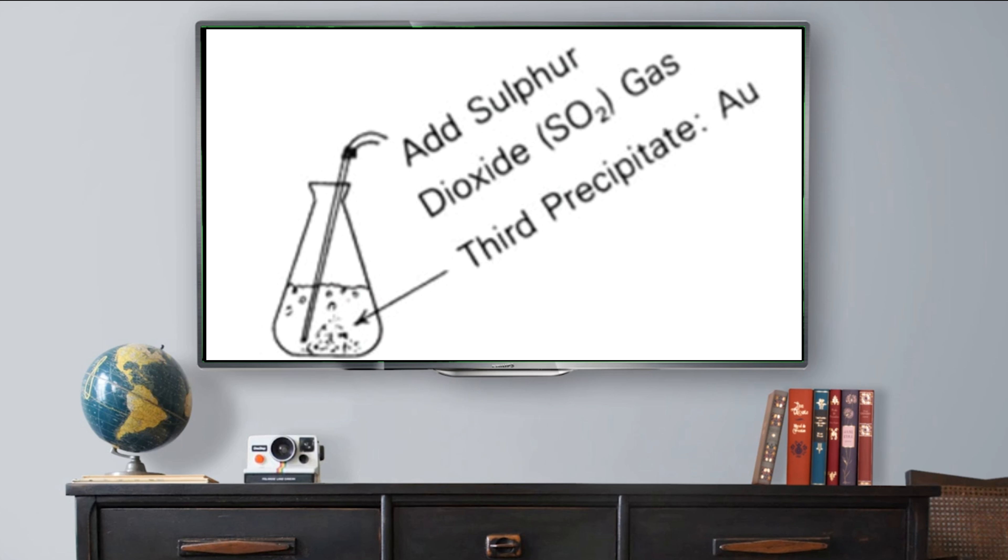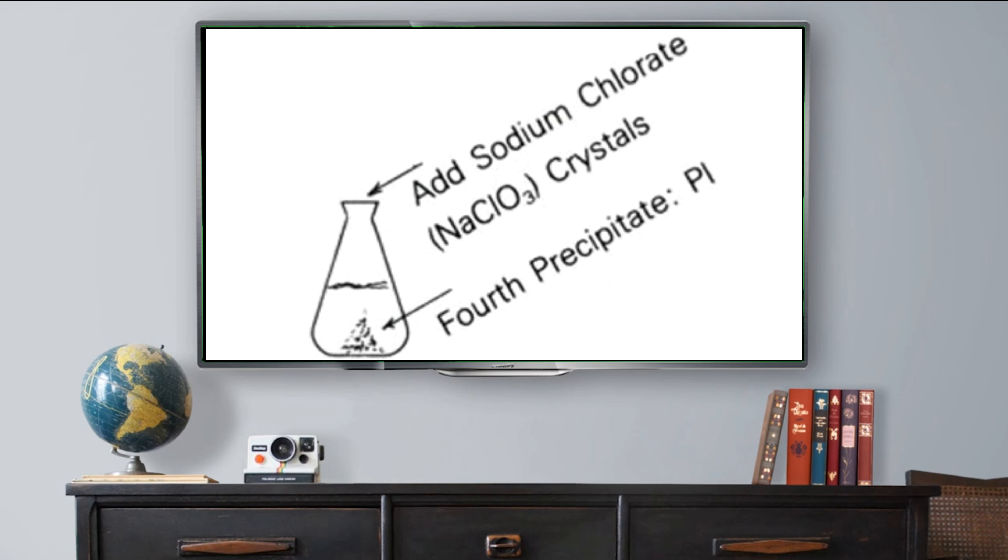After removing the silver, platinum, iridium, and gold, palladium can be recovered using sodium or potassium chlorate. Palladium is deposited as a brilliant red powder then cleaned and dried.